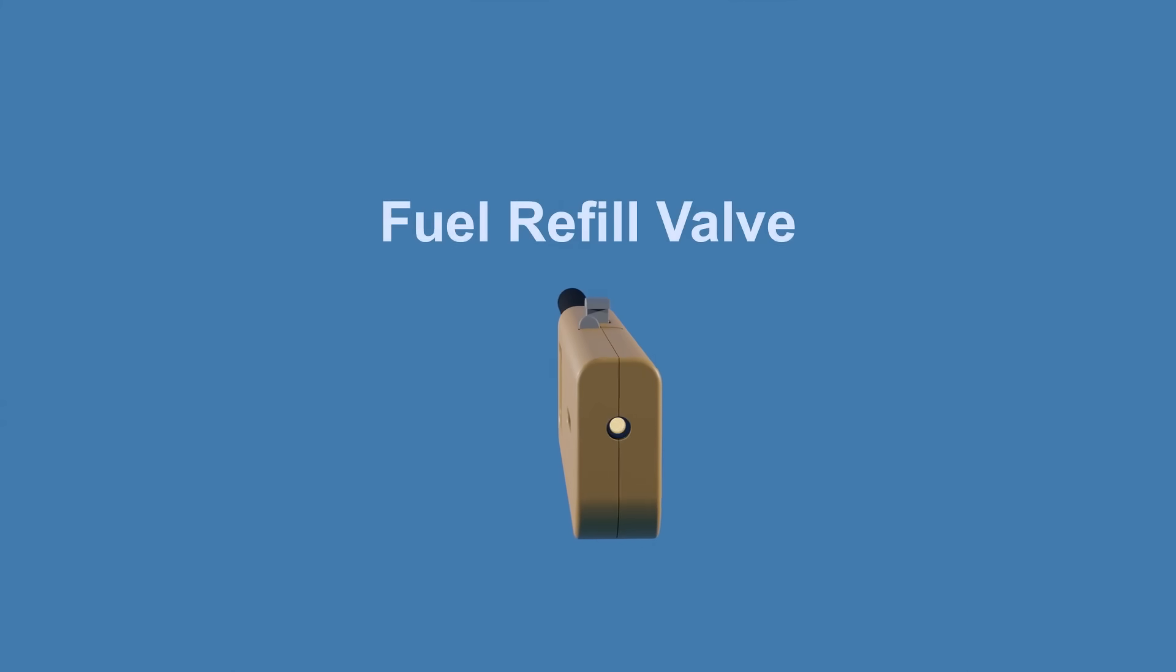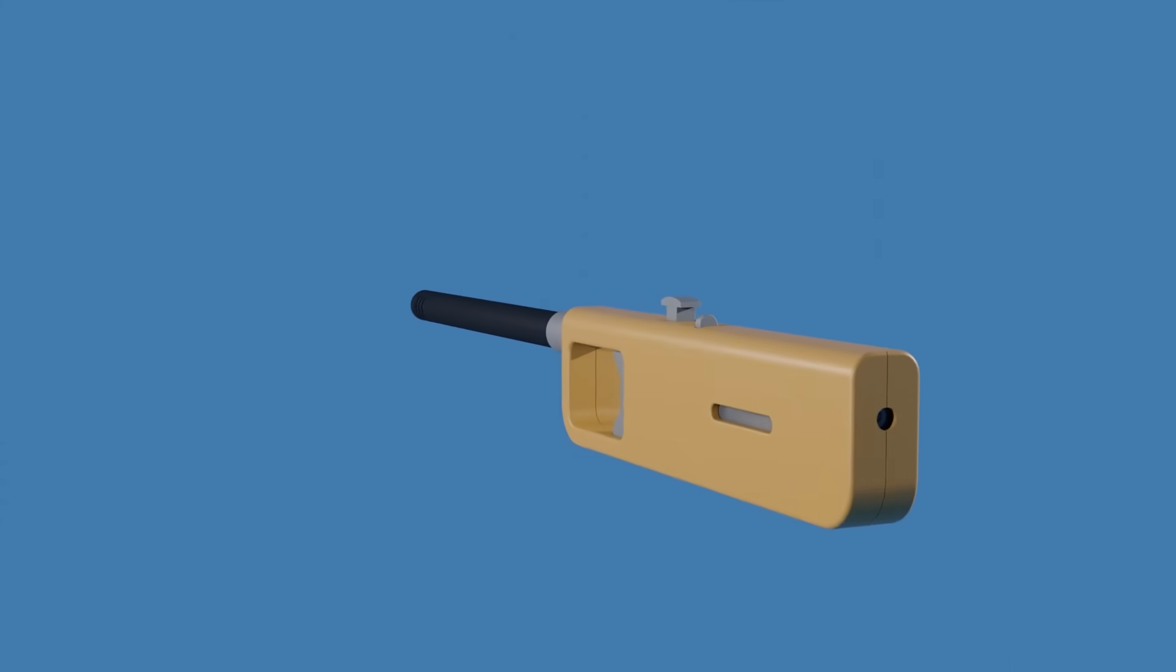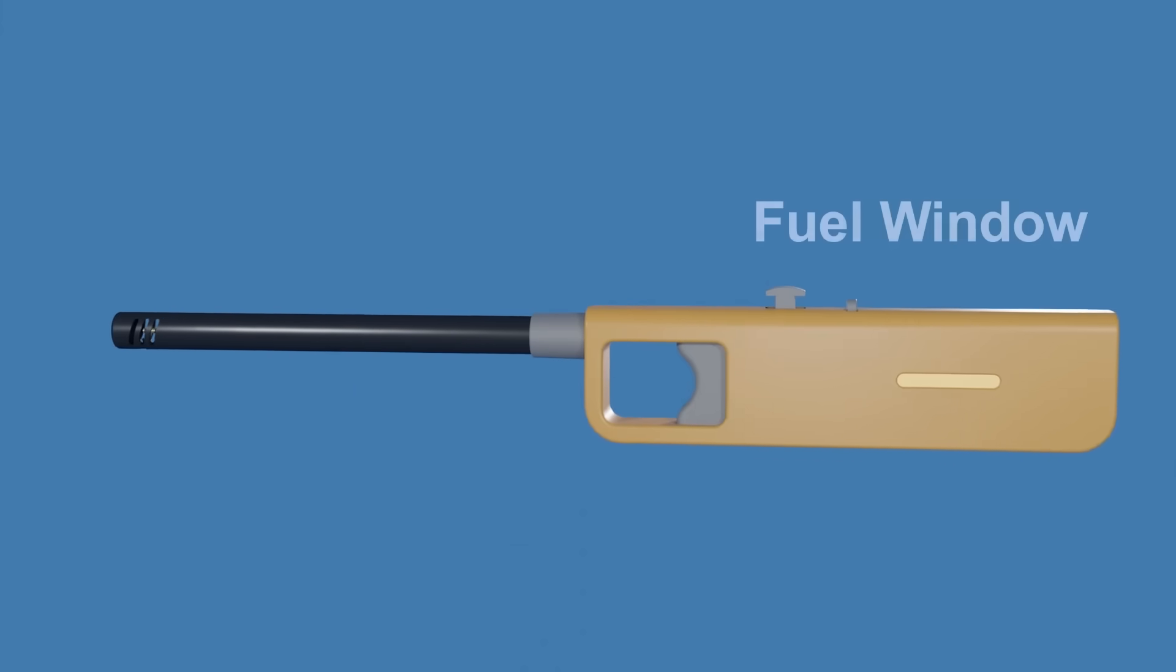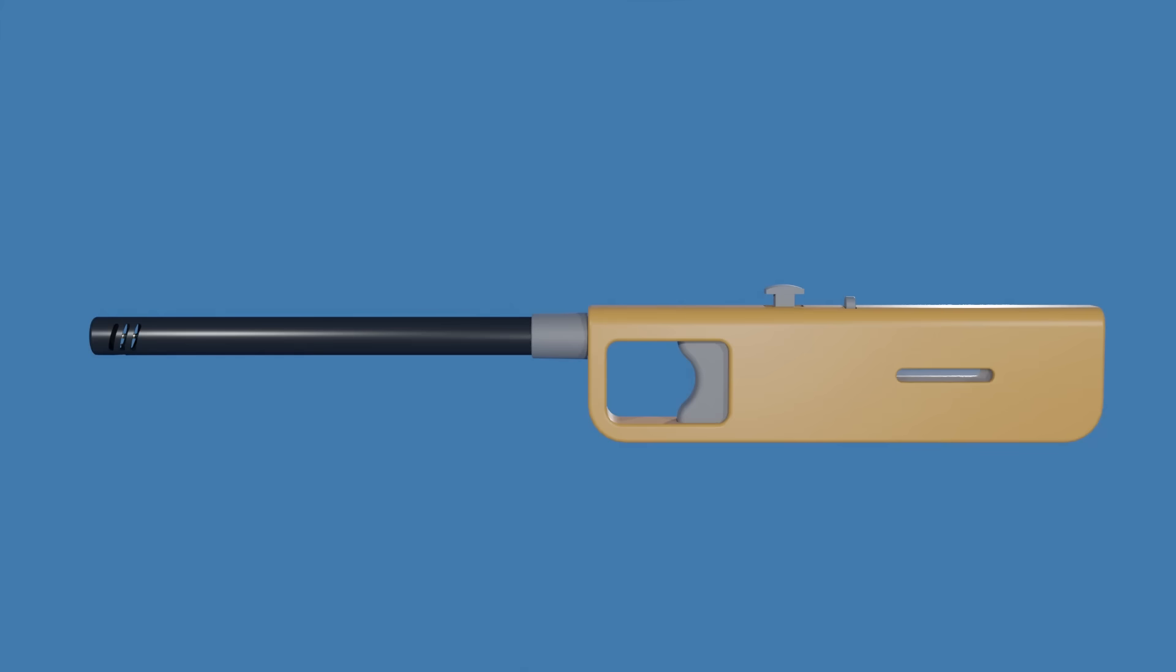This is the fuel refill valve that allows you to refill the lighter with fuel. There is a fuel window on each side of the lighter to provide a view of the fuel level inside the reservoir.